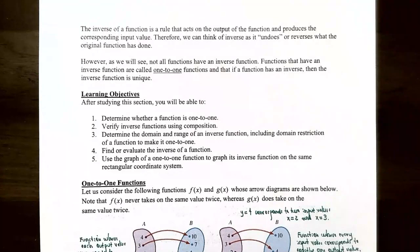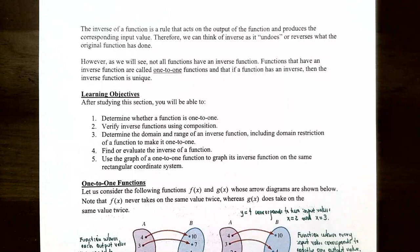If you have a value of x and you input it into a function, you will produce a y value if that x was in the domain of the function. The inverse function is going to take that y value, treat it like it's an input value, and it will output the original x — it will undo what f(x) did. Not all functions have an inverse function. Functions that have an inverse are called one-to-one functions, and if a function does have an inverse, that inverse function is actually unique — there's only one of them.